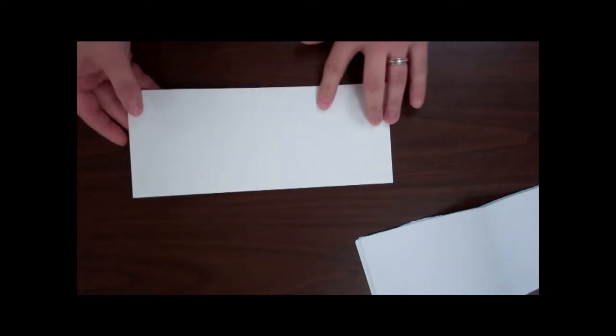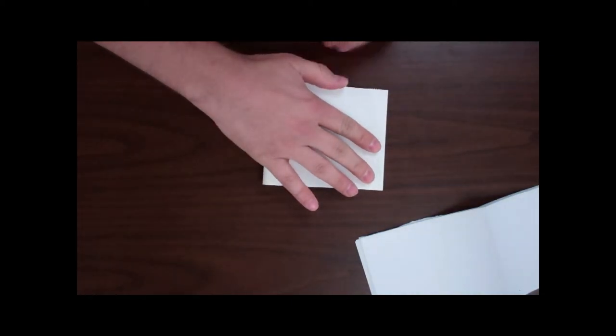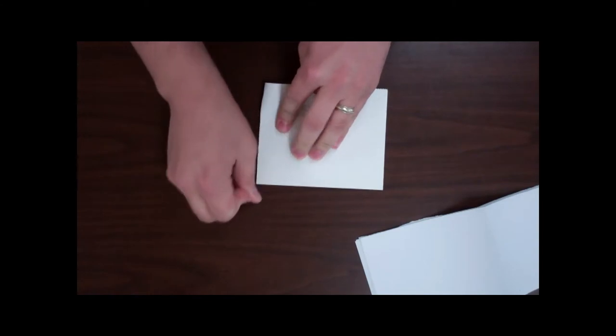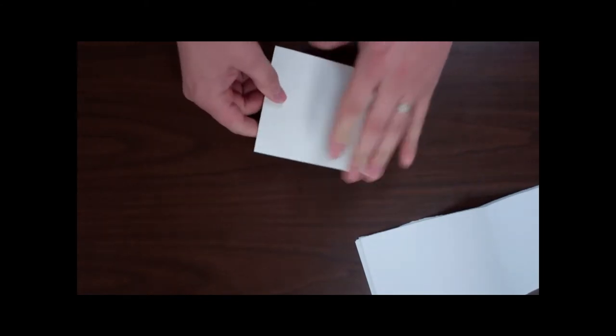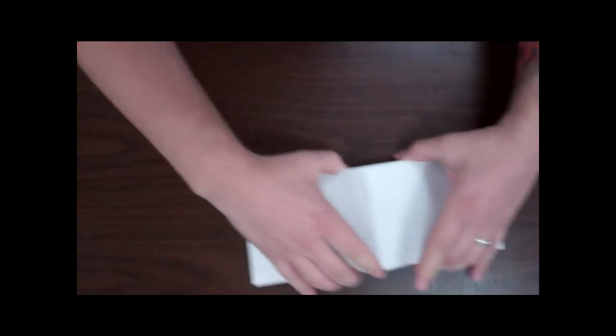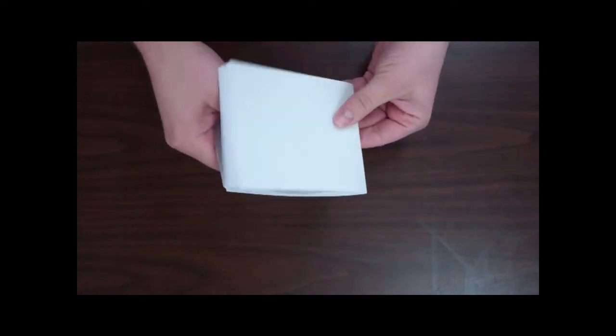After the pages are folded, you can then take your cardstock cover, simply fold it in half. Again, nice tight crease. This cover goes outside all of your pages and helps to hold them together.